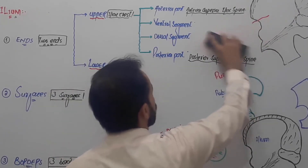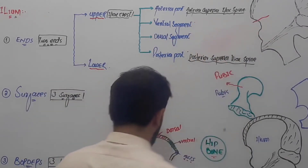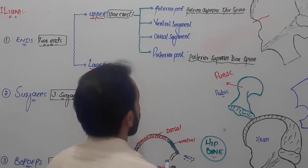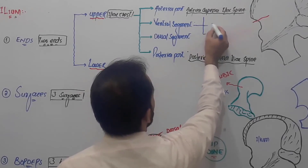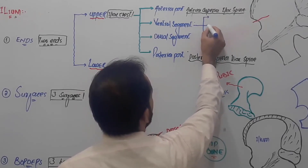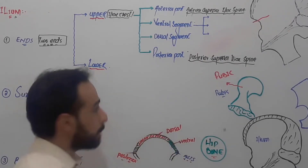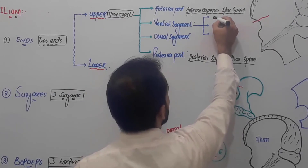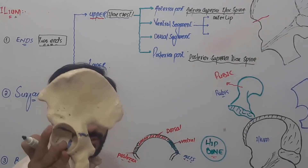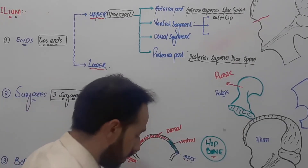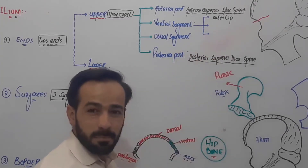The ventral segment has three sub-parts. What are those three sub-parts? First, there is the outer lip. I will show these while we discuss it practically and apply this theory on the bone.